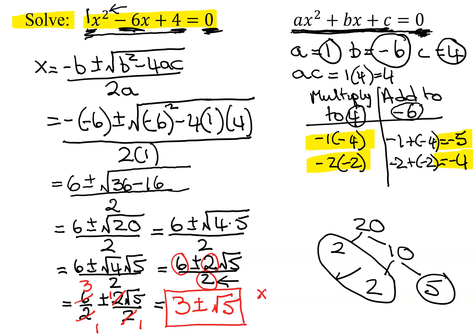So my answer is 3 plus or minus the square root of 5. Don't forget, if you're asked to write it as two solutions, the first one would be 3 plus the square root of 5, and the second solution would be 3 minus the square root of 5.